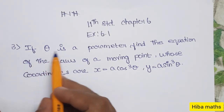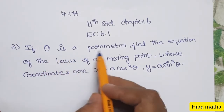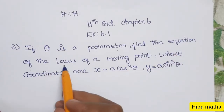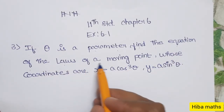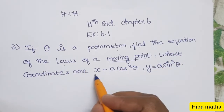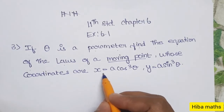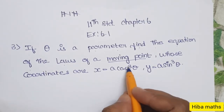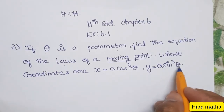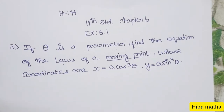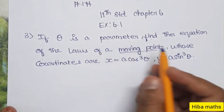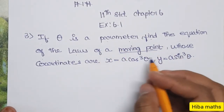If theta is a parameter, find the equation of the locus of a moving point whose coordinates are x = a·cos³θ and y = a·sin³θ.